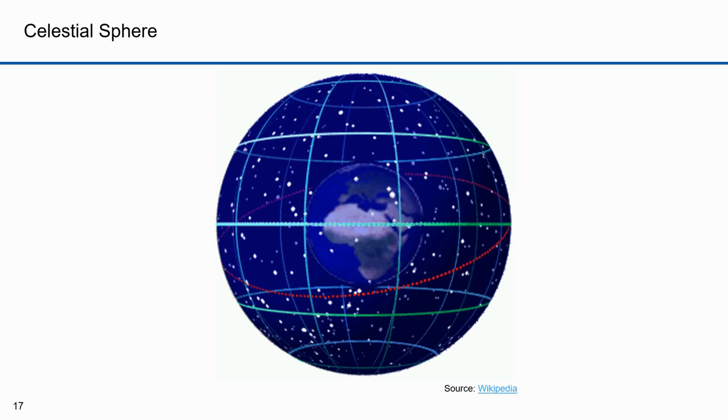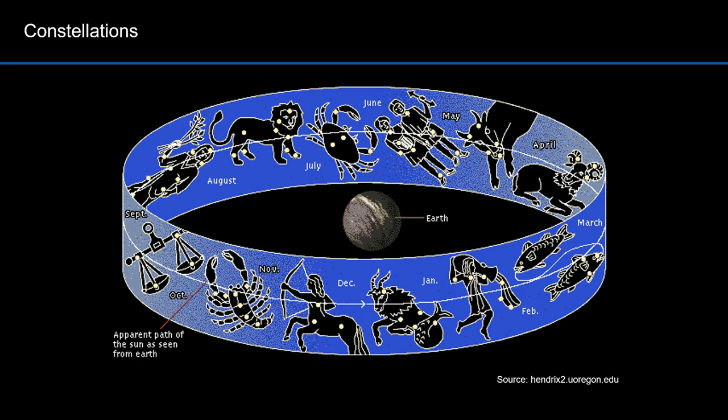Stars appeared to the ancients and even to us as a projection on a celestial sphere with the stars fixed and the earth rotating within. And then within the celestial sphere, stars were grouped into constellations, each representing a portion of the sky.